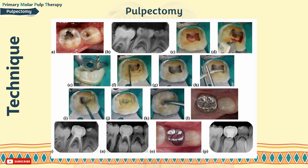Here is the technique again: removal of the caries, removal of the necrotic pulp and placing the files, irrigating, drying and filling, and at the end restoring the tooth with stainless steel crown.